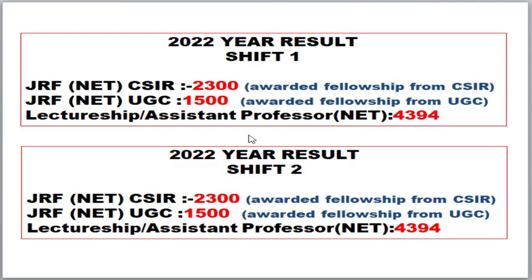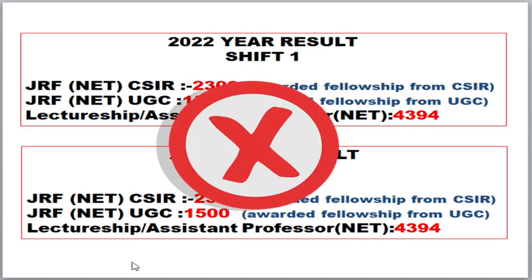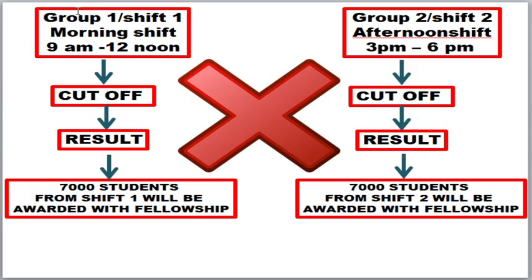In the 2020 CSIR JRF result, CSIR takes responsibility and gives fellowship for a set number of students, and UGC gives fellowship for another set — this is a joint CSIR-UGC examination. CSIR is not financially stable enough to provide fellowship for all students, so UGC also participates. Students wrongly think: shift 1 will have 2,300 JRF CSIR and 1,500 JRF UGC awarded separately, and shift 2 will again have 2,300 JRF CSIR and 1,500 JRF UGC. This is completely wrong.